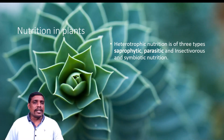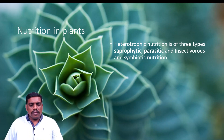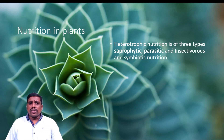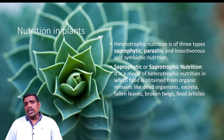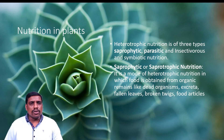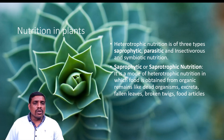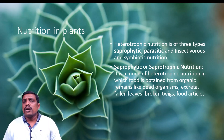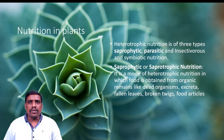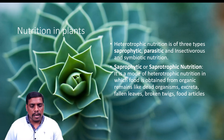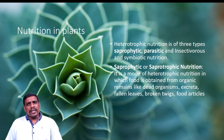Now, heterotrophic nutrition is of four types: first, saprophytic nutrition; second, parasitic nutrition; third, insectivorous nutrition; and fourth, symbiotic nutrition. So there are basically four different types of heterotrophic nutrition we can see in plants.